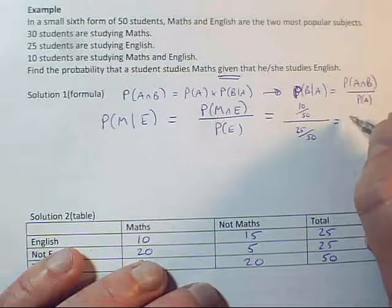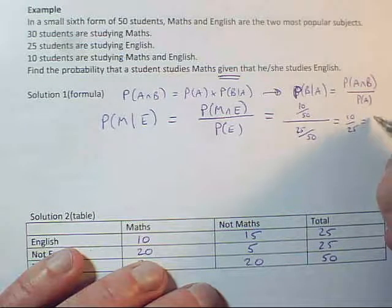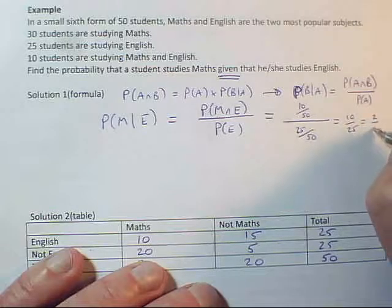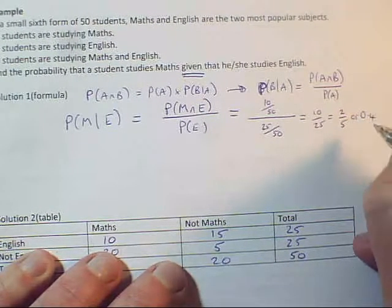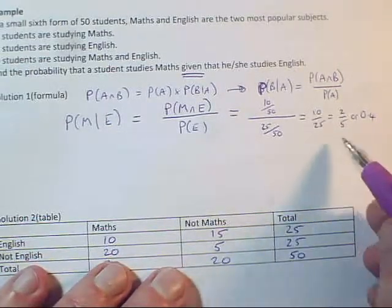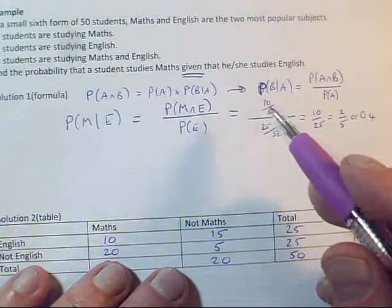So this will simplify to 10 over 25, though if I do it on my calculator, my calculator will take me all the way to 2 over 5 or even 0.4. Perfectly good answer. Any of those last three will get full credit. You probably need to simplify this version down.